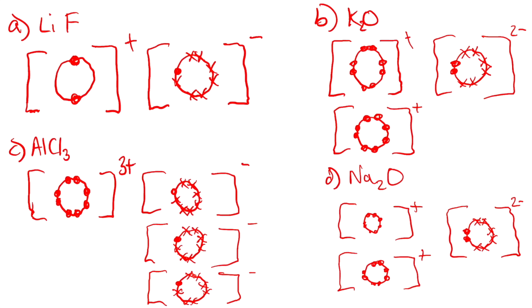For aluminium chloride, we need 3 chlorines per 1 aluminium. Aluminium has lost 3 electrons and now has a full outer shell with a 3+ charge. Each of the 3 chlorines has its 7 electrons plus 1 received from aluminium, giving each a 1− charge.